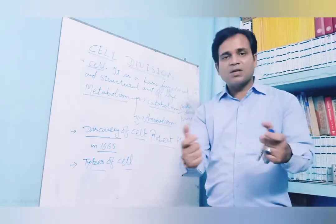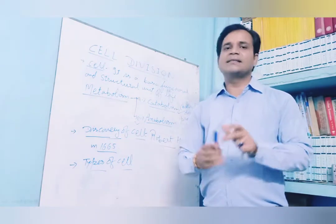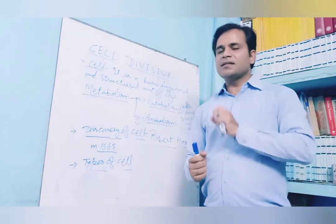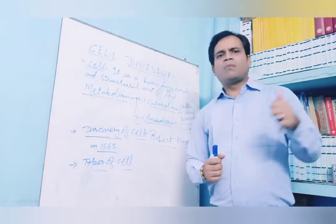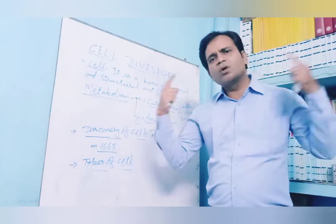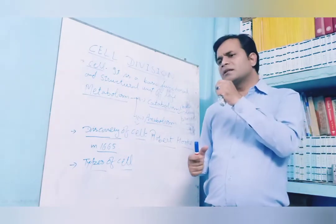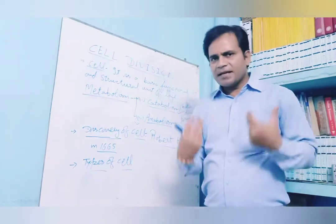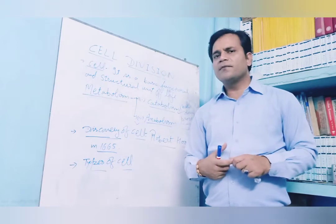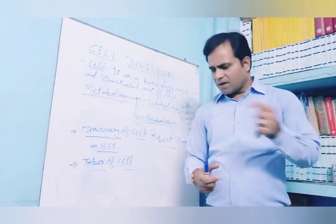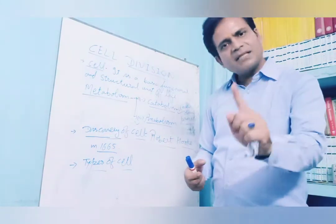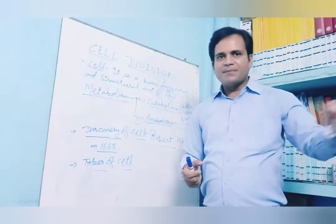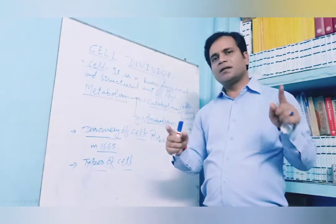Unicellular means 'uni' means single and 'cellular' means cell — those organisms made up of one cell are called unicellular. Multicellular means those organisms made up of more than one cell. We human beings are multicellular organisms. Examples of unicellular organisms include amoeba, bacteria, paramecium, and euglena.